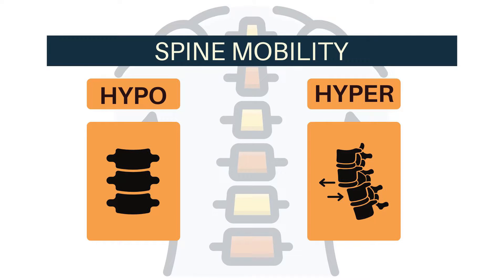Hypomobility is that set of problems where one or more vertebra are moving too little, and hypermobility is where one or more vertebra are moving too much.